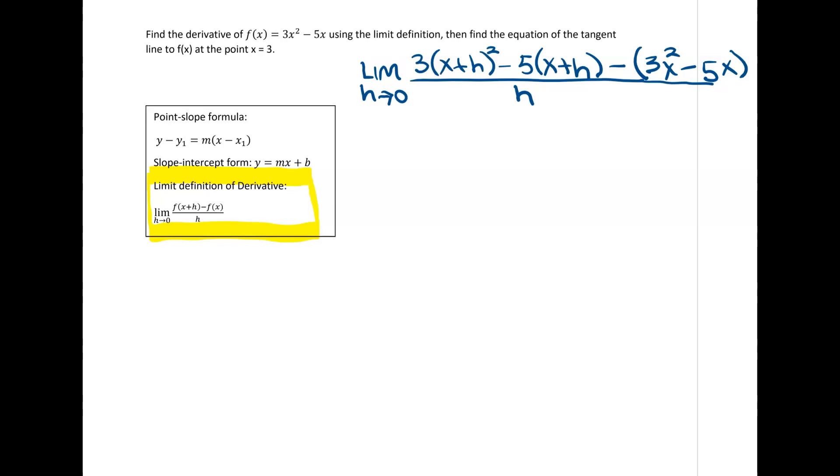So this f of x plus h that we're finding here is all right here. Okay, so onward we do our limit as h goes to 0. Keep this with it until we actually find this limit. So I'm going to do a little foil on x plus h squared. That's going to be x squared plus 2xh plus h squared. Distribute minus 5x minus 5h.